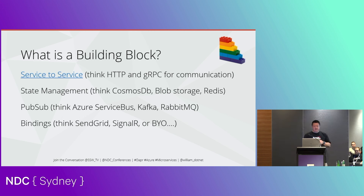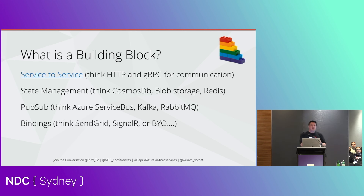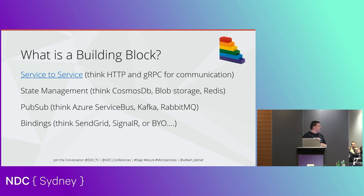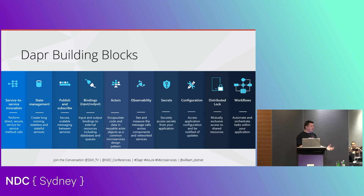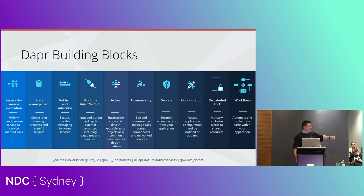Bindings are a special one. With all other building blocks it's abstractions — you're not dealing with a vendor-specific thing. But sometimes you have to. You can have a binding to something like SendGrid without having a dependency on a SendGrid SDK in your application. Building blocks also include: state management, Pub-Sub, bindings, actors pattern, observability, managing secrets, configuration, and workflows — if you use Durable Functions it's pretty much the same API, and quite a lot of the same people who worked on Durable Functions worked on that too.